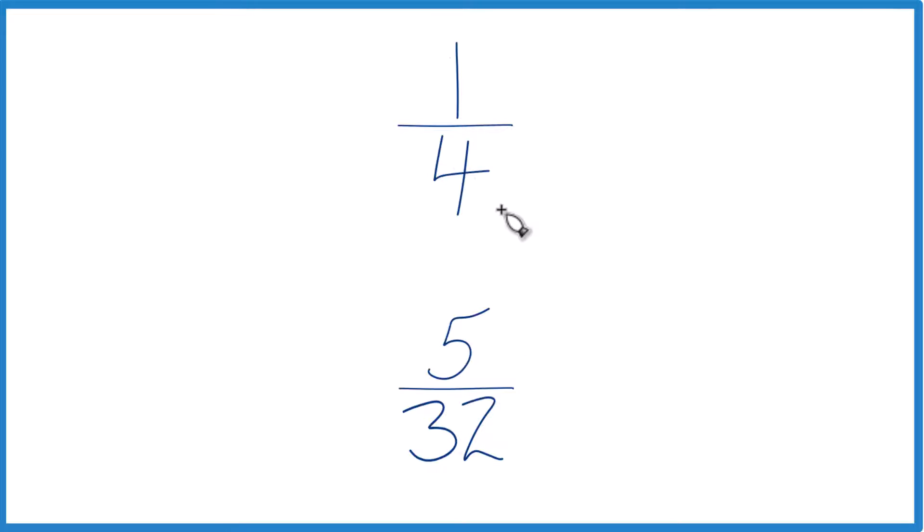The other way is to find a common denominator. So right now we have 4 and 32, but if we had the same denominator, then we could just compare the numerators.